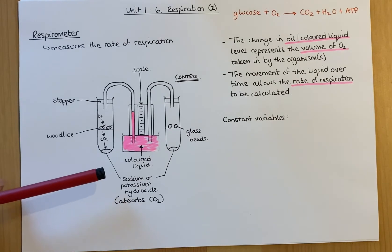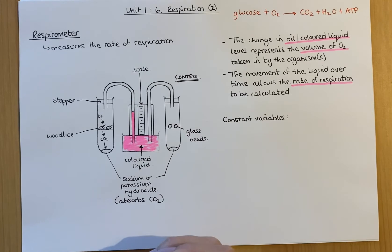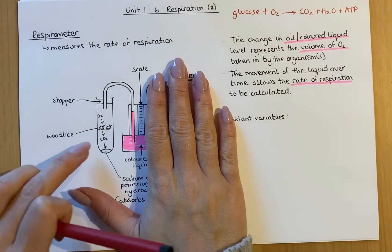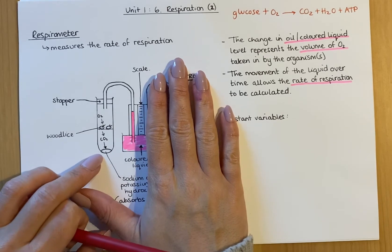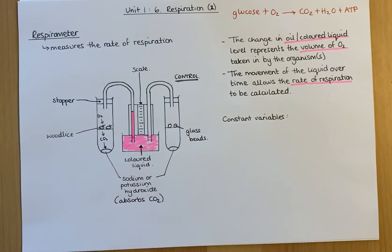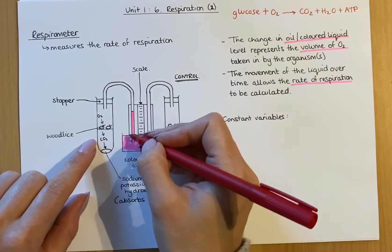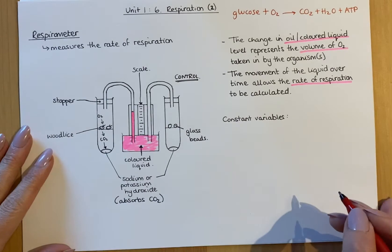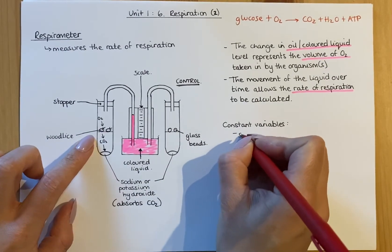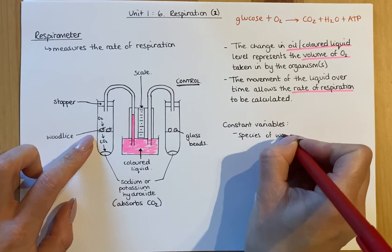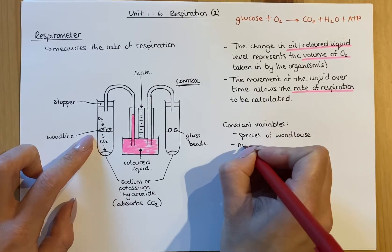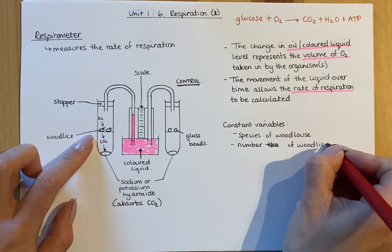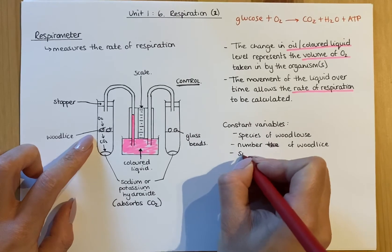This is normally an experiment used in questions for homework or other tasks. It might ask you about constant variables. If you were to repeat this experiment to make results more reliable, you'd have to keep the type or species of woodlice the same, the number of woodlice the same, and try to keep the size of them the same, because you can have really large woodlice and also smaller ones.